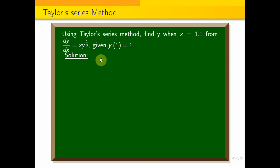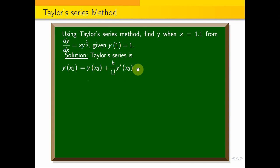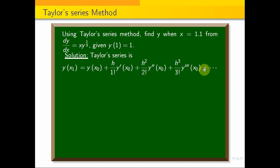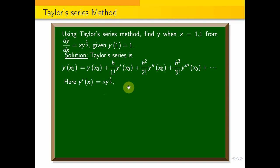This is a direct formula substitution problem. The Taylor series formula is: y(x1) = y(x0) + h/1! · y'(x0) + h²/2! · y''(x0) + h³/3! · y'''(x0) + ... From the problem, y' = x·y^(1/3), x0 = 1, y0 = 1, and h = 0.1.